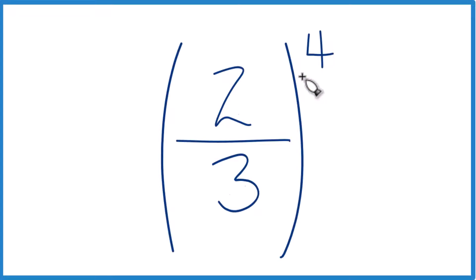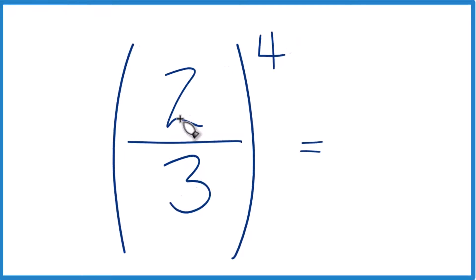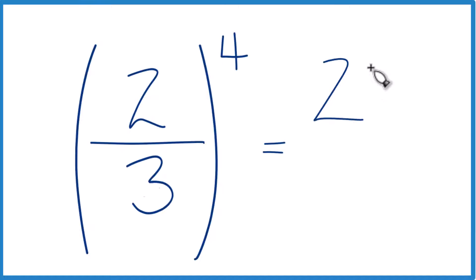Two-thirds to the fourth power, so how do you figure that out? A good way to do it would be to just take two to the fourth power and put that over three to the fourth power, like this.